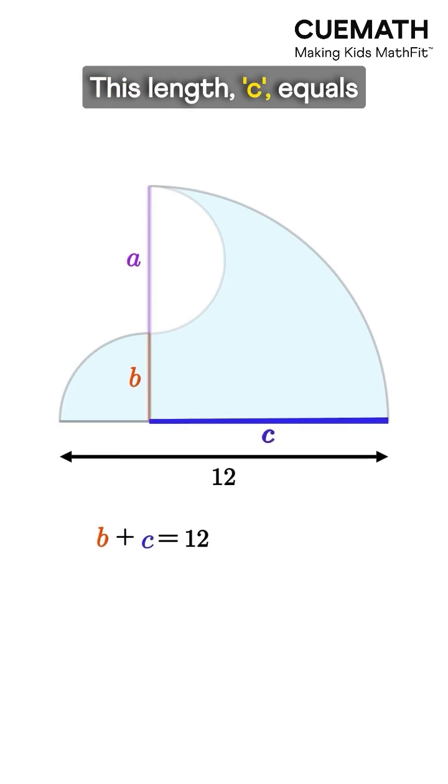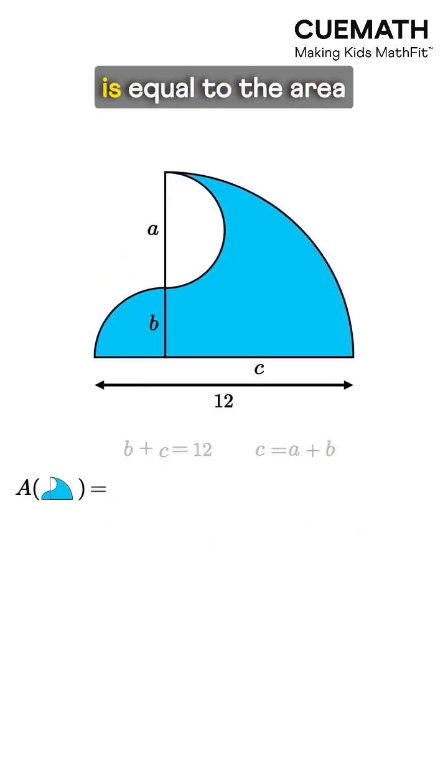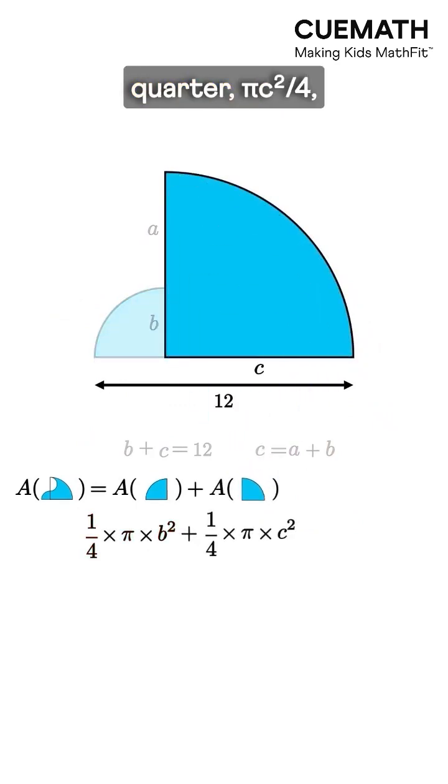This length C equals the sum of A and B. Now the shaded area is equal to the area of the small quarter, pi times B squared over 4, plus the area of the larger quarter, pi times C squared over 4.